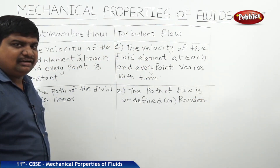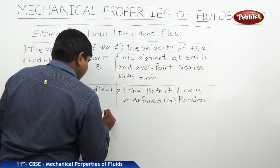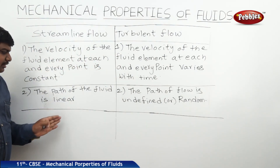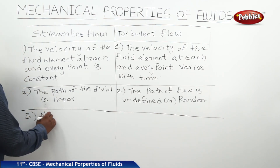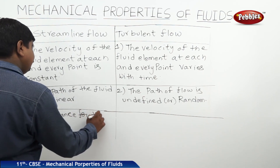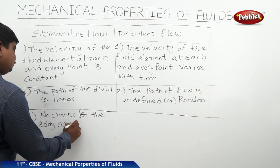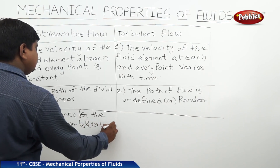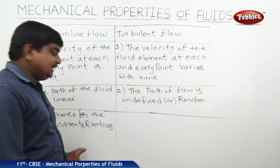Randomness means there is no particular direction to move — that is the biggest problem in turbulent flow. The third point is that in streamline flow there is no chance for eddy currents and vortices. But turbulent flow is an alternating combination of eddies and vortices.